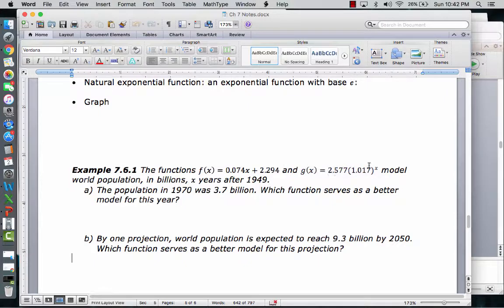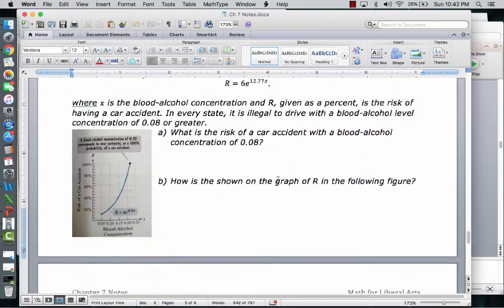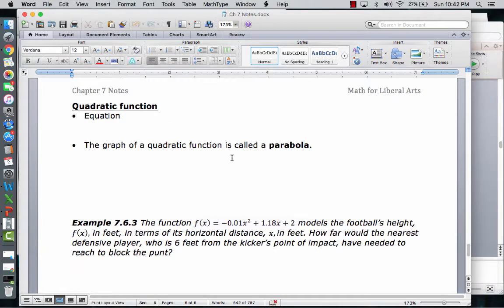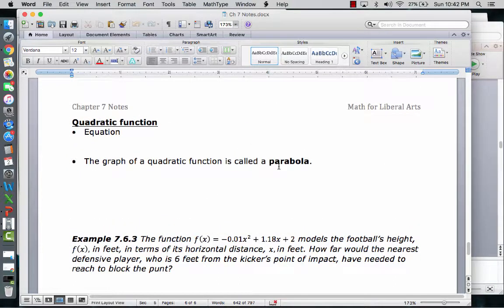Down here, this is a quadratic function. Anytime you see an x squared and an x part in there, or just basically the x squared part, that makes it a quadratic function, which looks like a parabola, which is that u shape like I'm showing with the mouse.